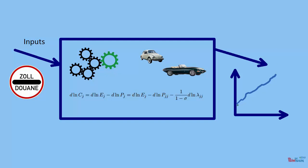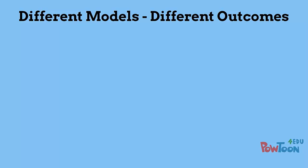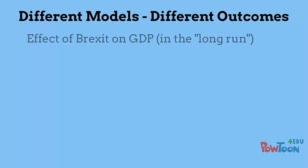Of course these outcomes aren't certain, and if we're good economists we need to vary these outcomes to see how sensitive the result is depending on what particular inputs we choose. So different economists come up with different predictions about the impact of Brexit on GDP.